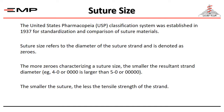Regarding the size of suture material, the United States Pharmacopoeia classification system was established in 1937 for standardization and comparison of suture materials. Suture size refers to the diameter of the suture strand and is denoted as zeros. The more zeros characterizing a suture size, the smaller the resultant strand diameter. For example, 4-0 is larger than 5-0. The smaller the suture size, the less the tensile strength of the strand.